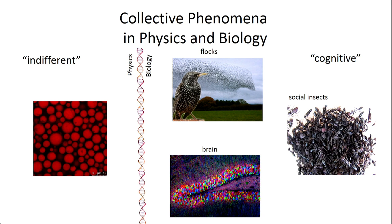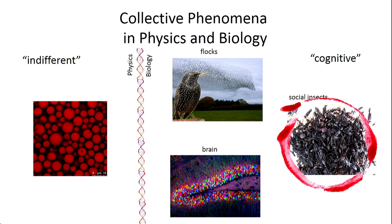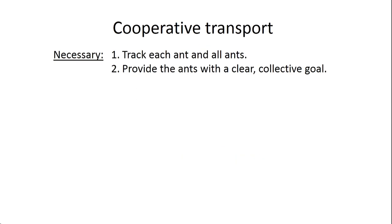This is the approach I'll be trying to convey in this talk, and I study ants. To approach this question, you need two necessary things. One is that, because we want to look at the relations between the individual and the group, it's good if experimentally you can track each individual and all individuals — ants in our case. The second thing, since we're interested in indifferent versus cognitive, we better give the animals some kind of a goal, a clear collective goal. These two things are typically not that simple to achieve in many biological systems.